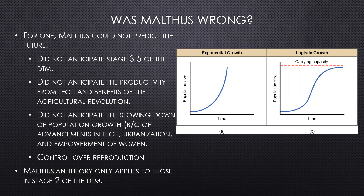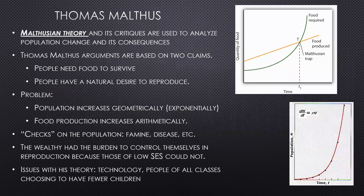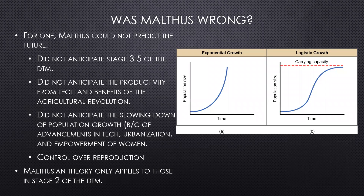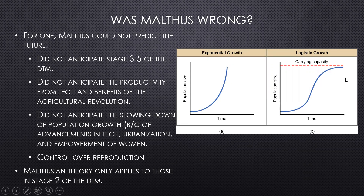He also didn't recognize that famine — a lack of food in a particular place — is usually related not to a lack of food overall but to the unequal distribution of food. Coming from a wealthy background, he lacked that point of view. He envisioned a J-curve for the future, but what we're seeing today is more of an S-curve, with some countries even declining.